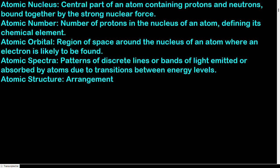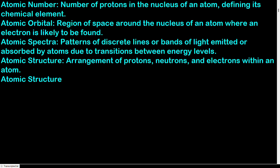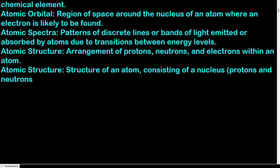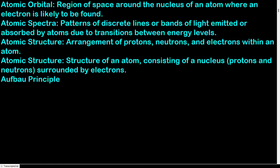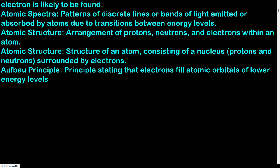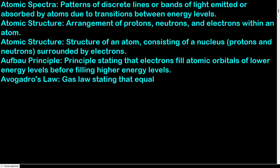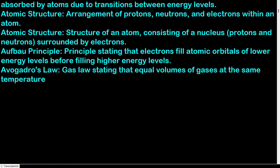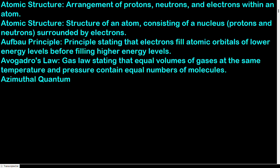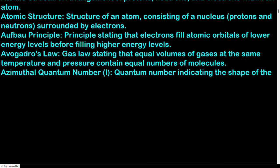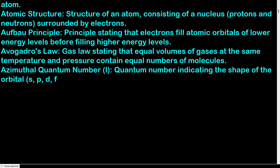Atomic structure: arrangement of protons, neutrons, and electrons within an atom — a nucleus of protons and neutrons surrounded by electrons. Aufbau principle: electrons fill atomic orbitals of lower energy levels before filling higher energy levels. Avogadro's law: equal volumes of gases at the same temperature and pressure contain equal numbers of molecules. Azimuthal quantum number (l): quantum number indicating the shape of the orbital (s, p, d, f) in which an electron is found.